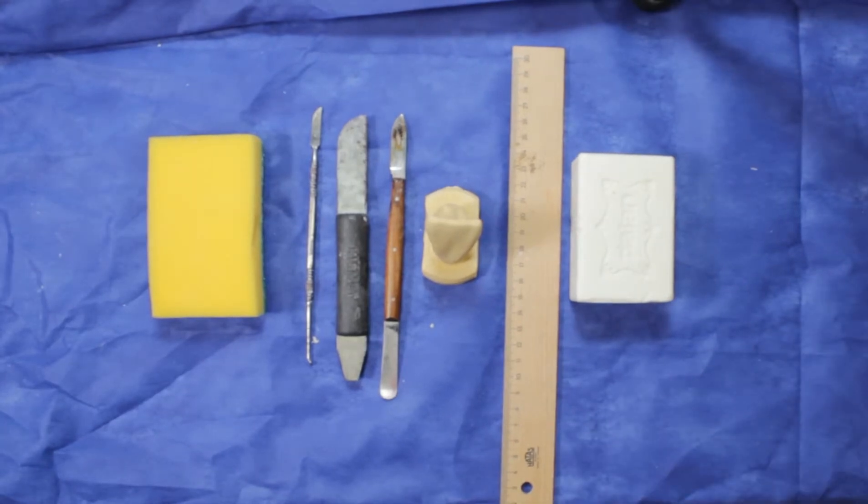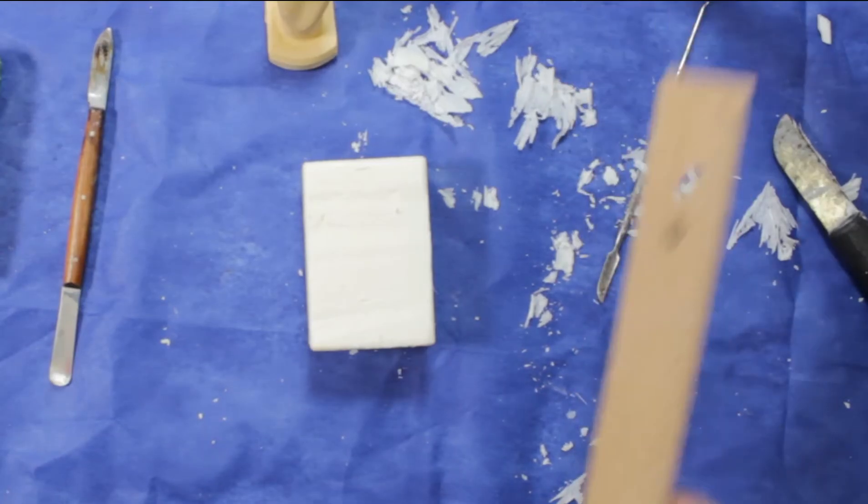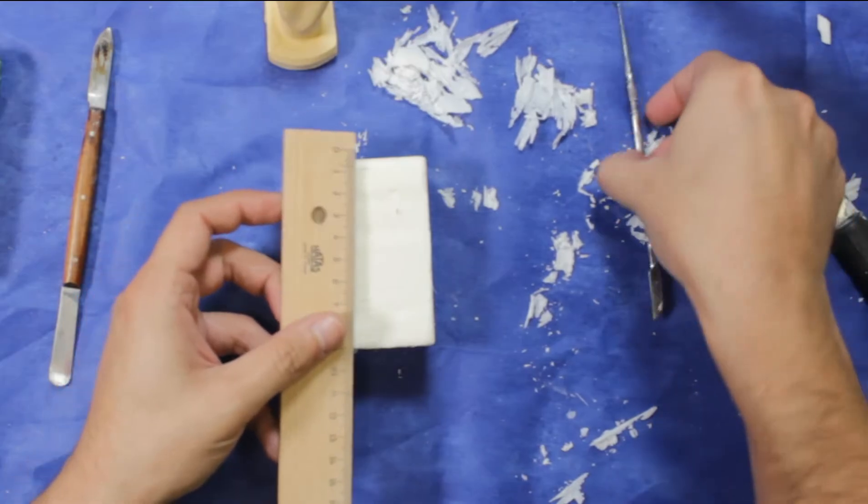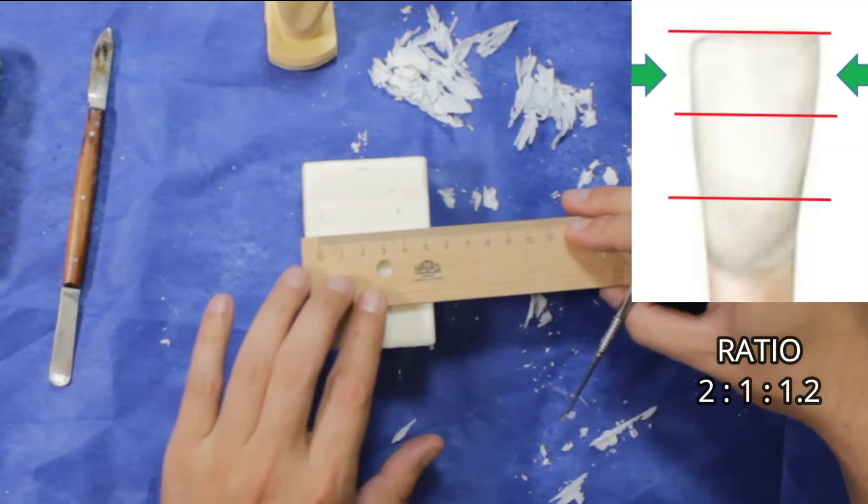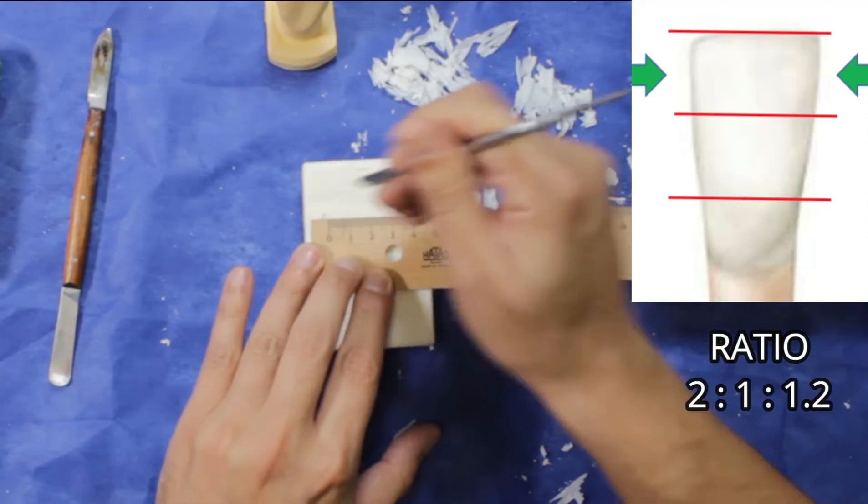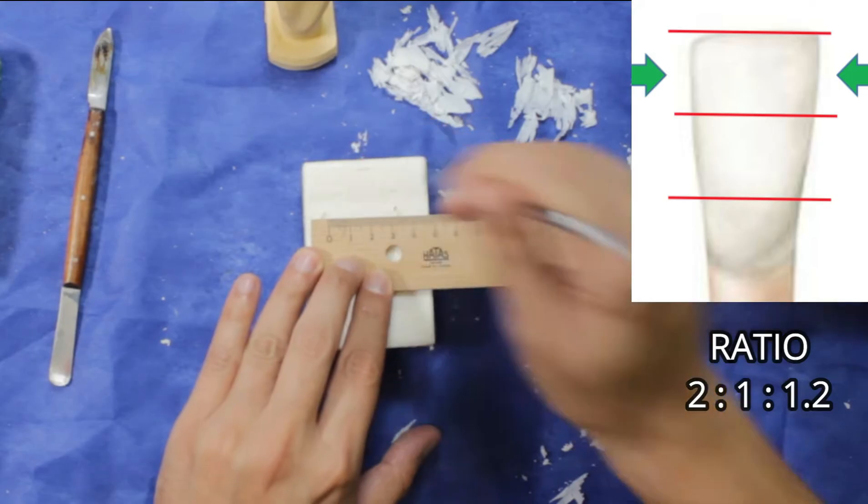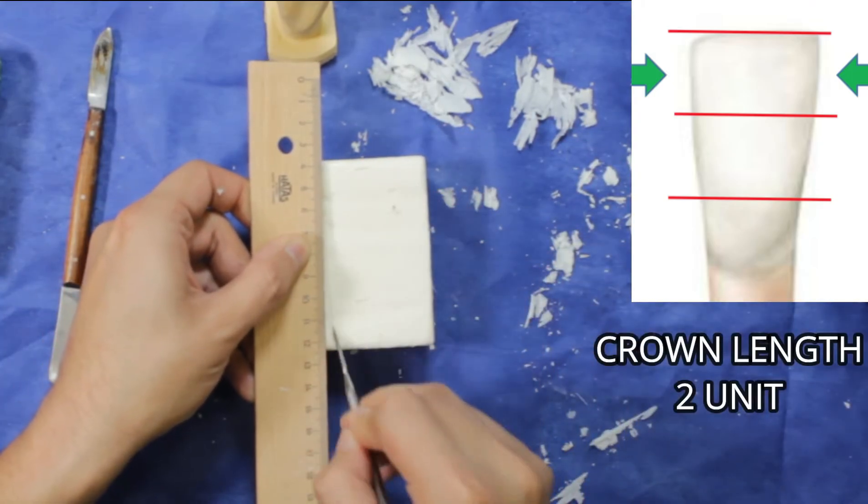Hey everyone, today we will carve a mandibular central incisor. First of all, as usual, we will mark the required measurements of the tooth. According to other teeth, the mesiodistal of mandibular central incisors is very narrow, so we will use this ratio. Crown length is two units, mesiodistal width is one unit.